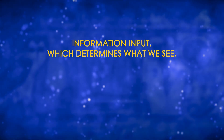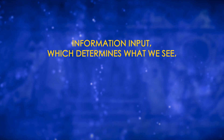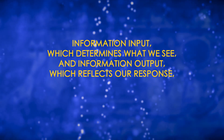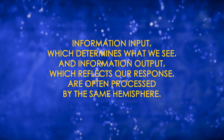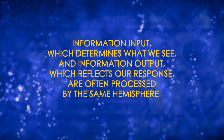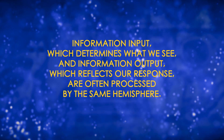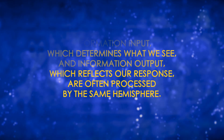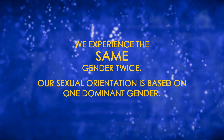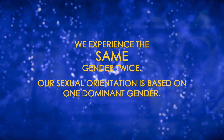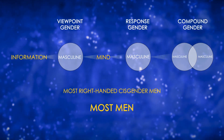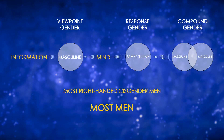Information input, which determines what we see, and information output, which reflects our response, often default to be processed by the same hemisphere. In that case, we experience the same gender in both the viewpoint stage and the response stage — in other words, we experience the same gender twice. So our sexual orientation is based on having one dominant gender. An example of this is most right-handed cisgender men.